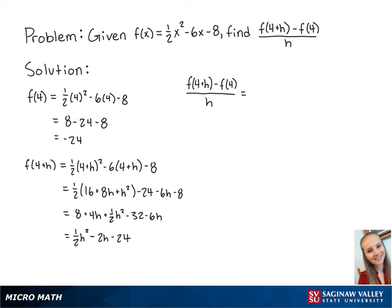Next, we're going to plug in our values for f of 4 and f of 4 plus h so that we have 1 half h squared minus 2h minus 24 minus negative 24 all over h.